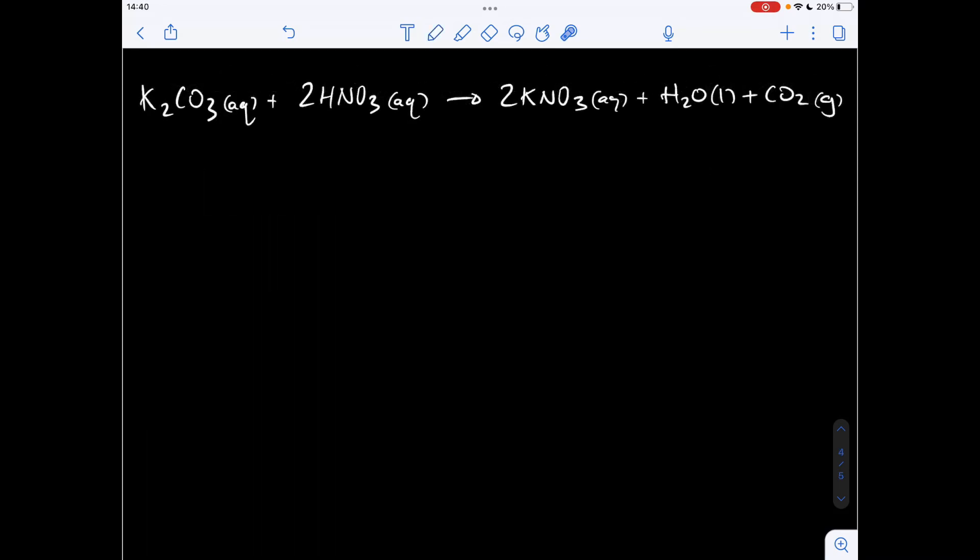OK, so the third and final reaction we're going to look at is this one here. And the reason I've chosen this one is we've got liquids and gases in the equation as well, and we've not seen those yet. So the reaction involves aqueous potassium carbonate reacting with aqueous nitric acid, and it makes aqueous potassium nitrate, water, and carbon dioxide.